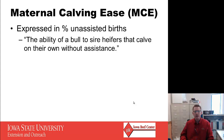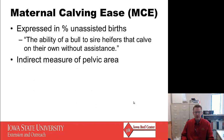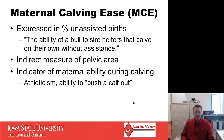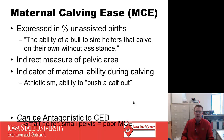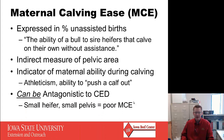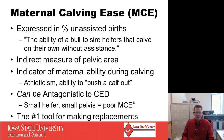Maternal calving ease is one generation further — also expressed as a percentage of unassisted births. It is the ability of a bull to sire heifers that calve on their own, and serves as an indirect measure of pelvic area. It's a good indicator of maternal ability during calving — the athleticism of a cow and her ability to push a calf out on her own. It can be antagonistic to calving ease direct; logically, a small heifer has a small pelvis and therefore a poor maternal calving ease EPD. This is the number one tool when selecting a bull if you plan on keeping daughters or making replacements.